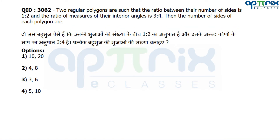Question number 62: There are two regular polygons such that the ratio of the number of sides is 1 : 2, and the ratio of their interior angles is 3 : 4. We need to find the number of sides of each polygon.